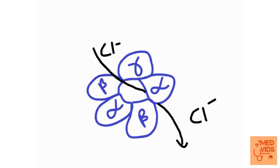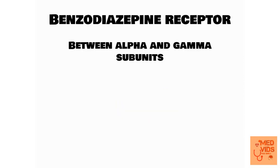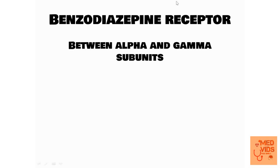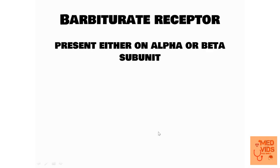The benzodiazepine receptor is present between the alpha and gamma subunits of the GABA receptor. The barbiturate receptor, on the other hand, is present either on the alpha or beta subunit — it's not a fixed place like the benzodiazepine receptor. Remember: benzodiazepine receptor is between alpha and gamma subunits, whereas the barbiturate receptor is on the alpha or beta subunit.